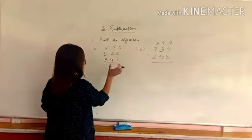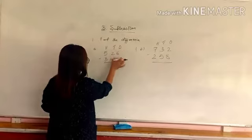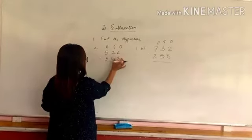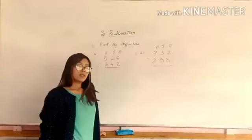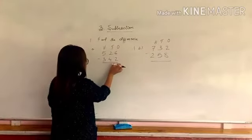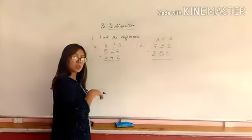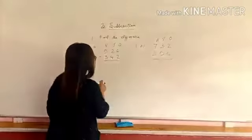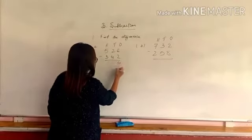Always remember, always start subtracting from 1's place. Not from here, you will always start from 1's, 10's and 100's. So let's start with 1's place. 6 minus 2, how much? 4.